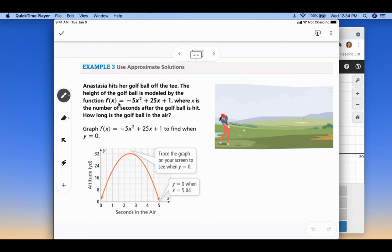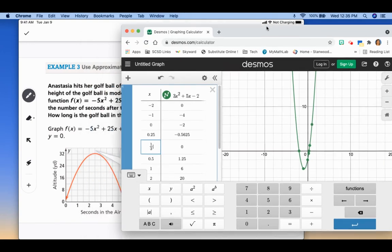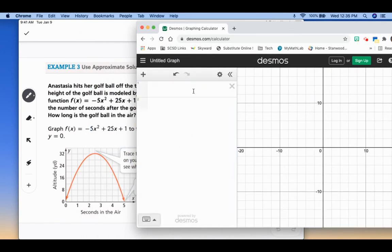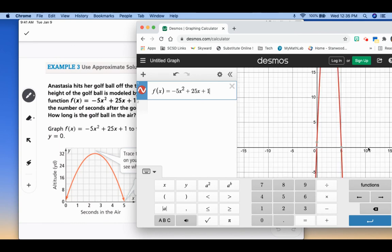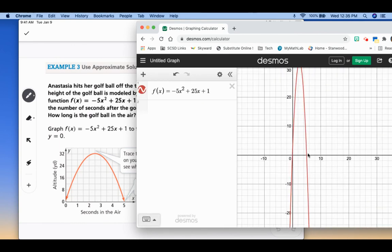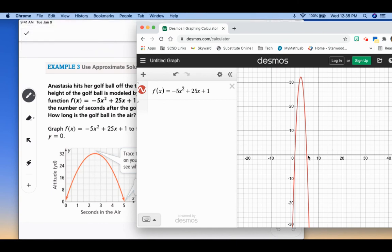And our last example says Anastasia hits her golf ball off the tee. The height of the golf ball is modeled by the function f(x) = -5x² + 25x + 1, where x is the number of seconds after the golf ball is hit. How long is the golf ball in the air? So we can graph this. So I'm going to leave this off to the side. I'm also going to come over here and show how I can graph this. So I'm going to type in f(x) = -5x² + 25x + 1.